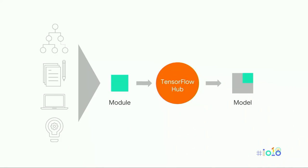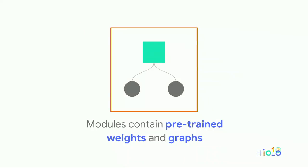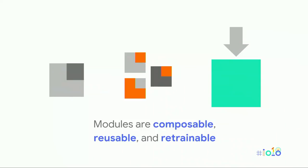You can import those modules into your model. They are pre-trained, so they have the weights and the TensorFlow graph inside. Unlike a model, they're designed to be composable — you can put them together like building blocks and add your own stuff on top. They're reusable, with common signatures so you can swap one for another, and they're retrainable, meaning you can back-propagate through a module inserted into your graph.